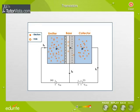If IE, IB, and IC are emitter current, base current, and collector current respectively, then the emitter current is given by IE equals IB plus IC. This base current, IB, is very small, but a small change in it can significantly change the collector current, IC.